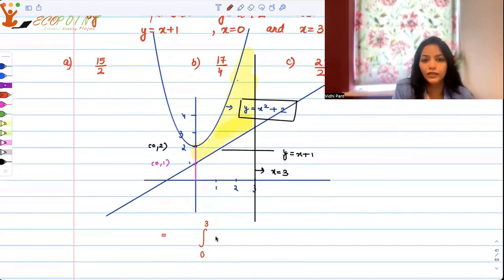So from 0 to 3, x squared plus 2 dx. This basically tells you that you are looking into the area under the curve x squared plus 2, minus